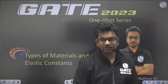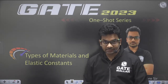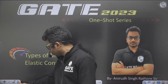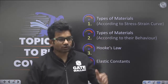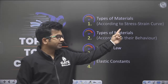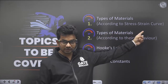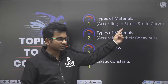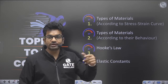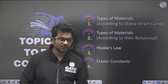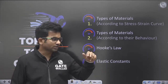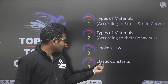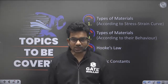Hello dear students, this is Anirut Singh Rathaur and we are discussing a one-shot series. In today's topic we are going to discuss types of materials and elastic constants. The total topics will be four: types of materials based on stress-strain curve, types of materials according to their behavior, Hooke's law, and elastic constants.